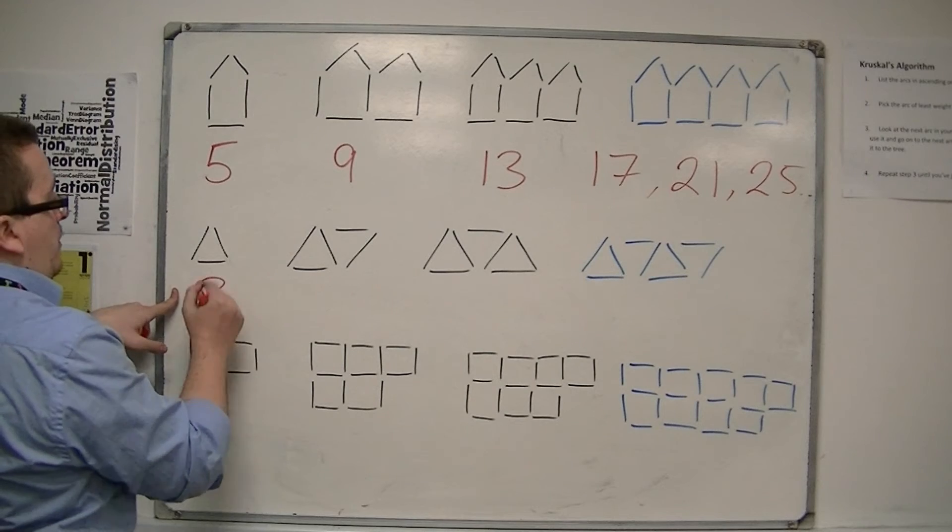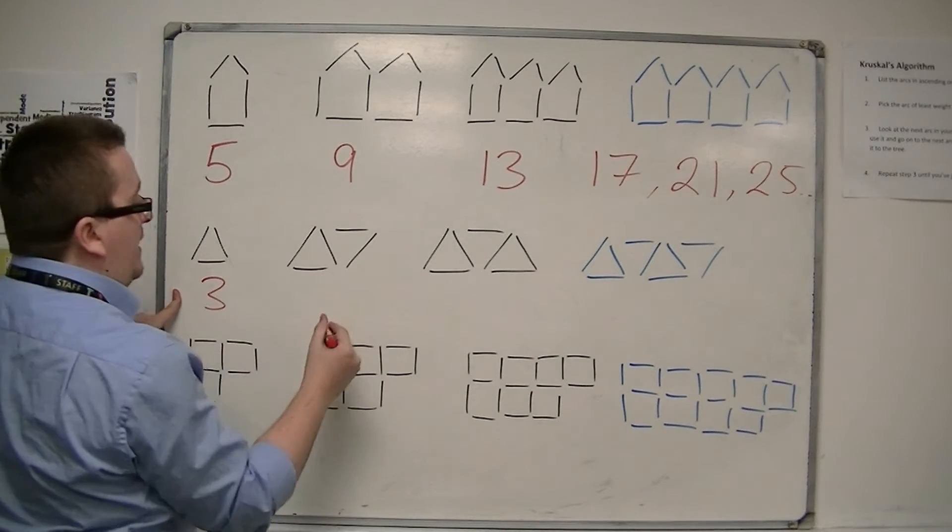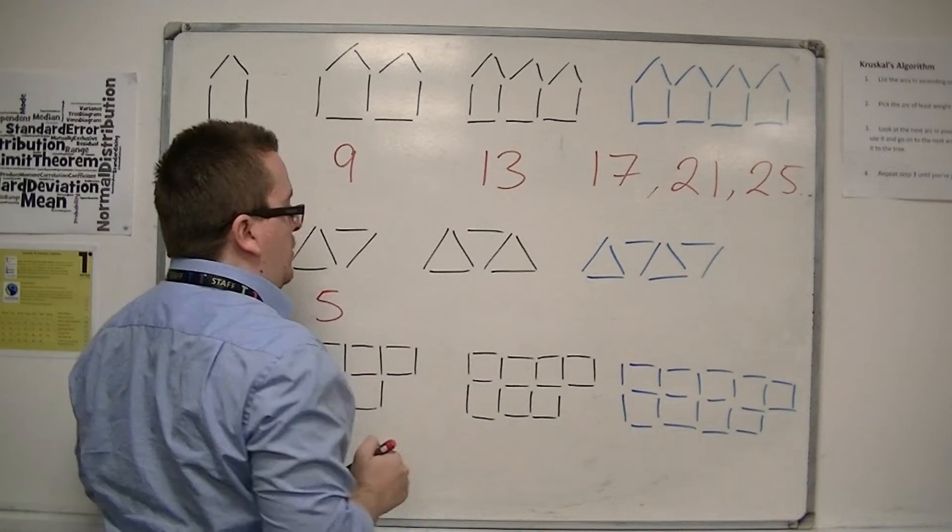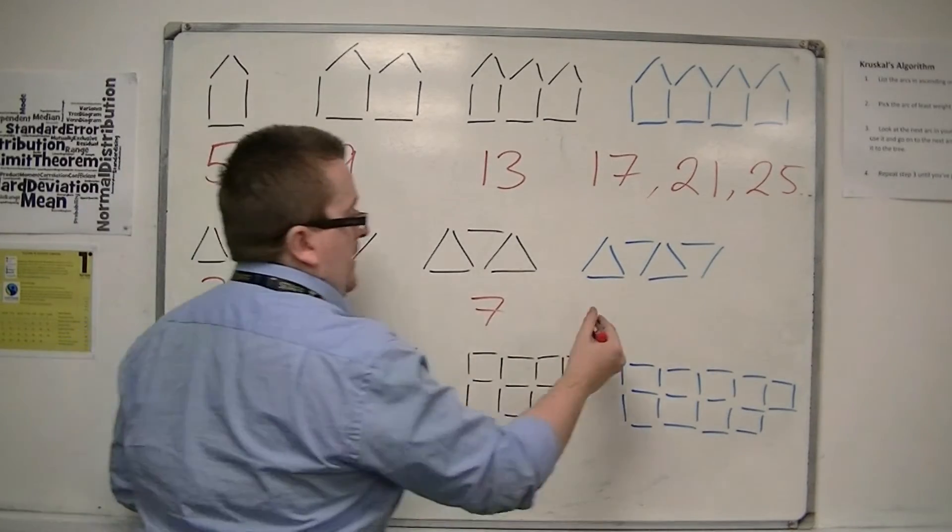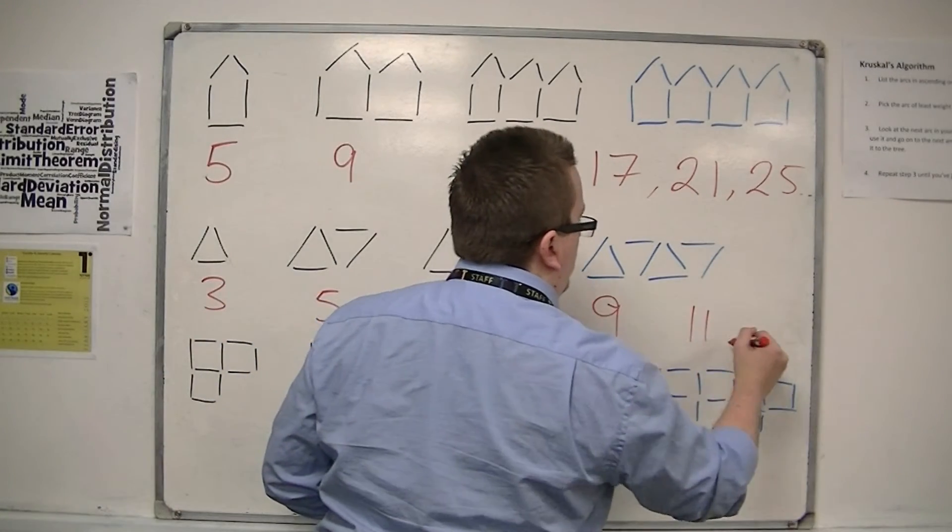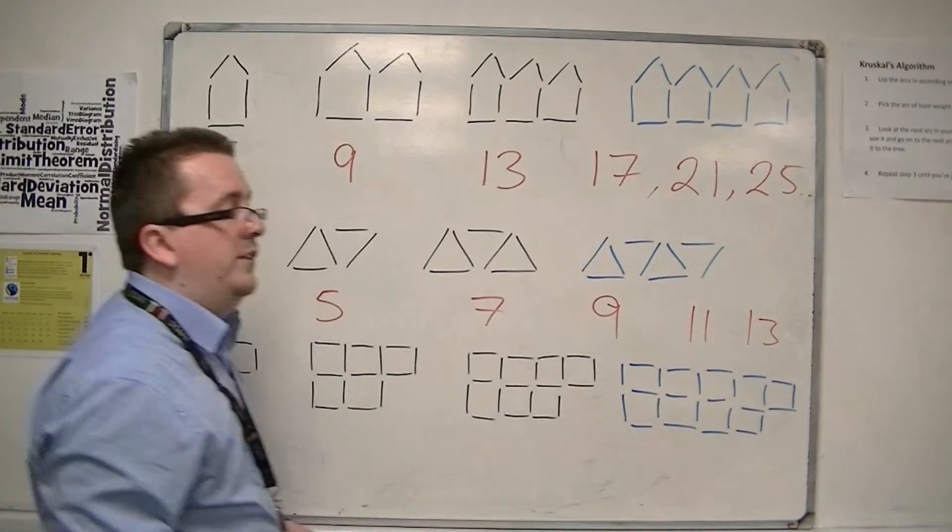This one, starting off with three matchsticks, then I'm adding on another two, so I've got five, then I'm adding on another two, so I've got seven, then I would get nine, then eleven, thirteen, then fifteen, seventeen, and so forth.